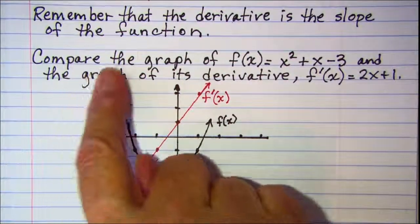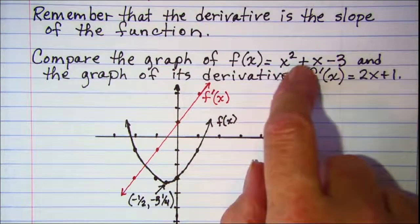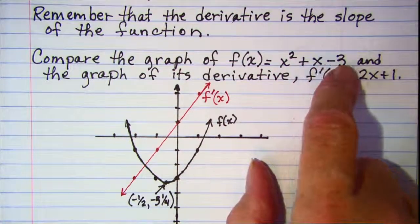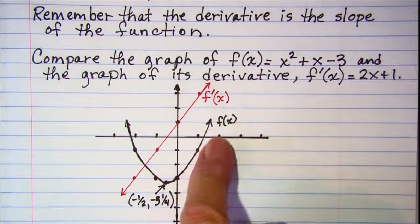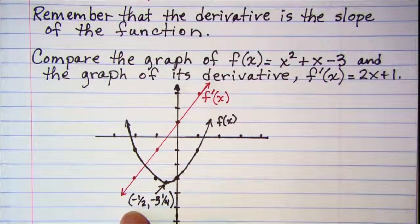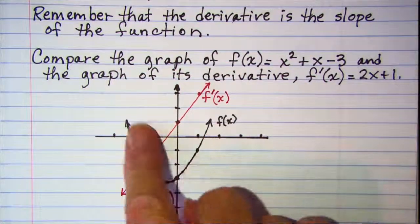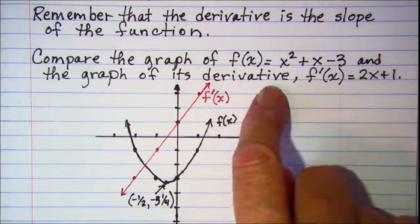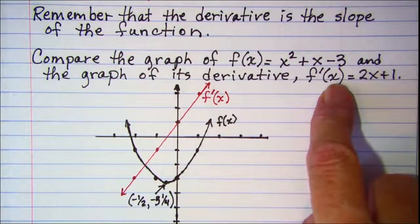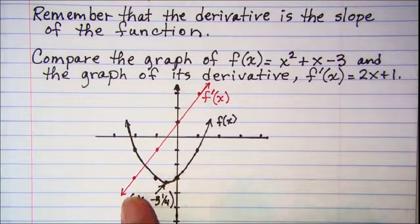We will be comparing the graph of the function f of x equals x squared plus x minus 3 — that's this parabola shown in black. The turning point or vertex has coordinates negative one half, negative three and a fourth. We're comparing that function with the graph of its derivative, f prime of x equals 2x plus 1, which is shown here in red.